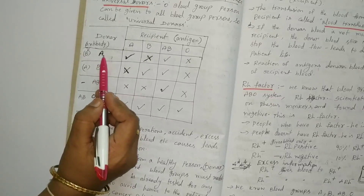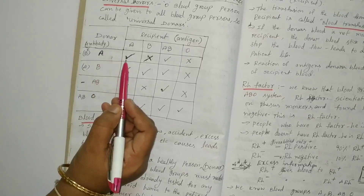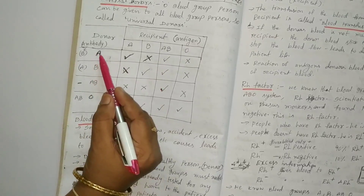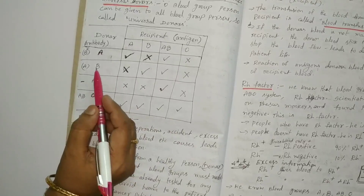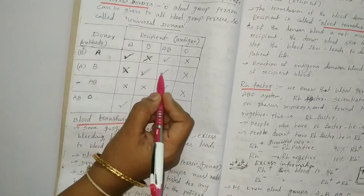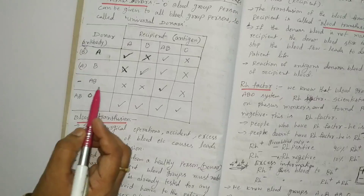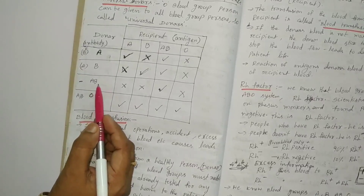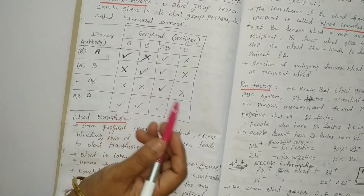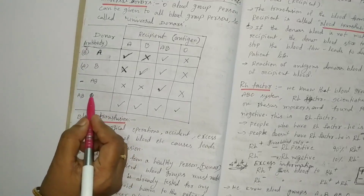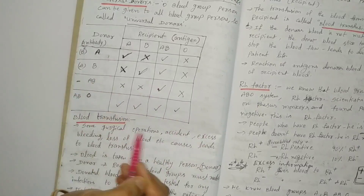A blood group gives to A and AB, but does not give to B and O. B blood group gives to B and AB, but does not match A and O. AB blood group donates blood only to AB — A, B, O do not match. O blood group gives to all blood groups — tick all. This is the main table.